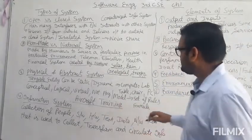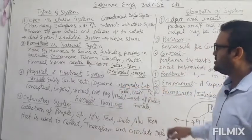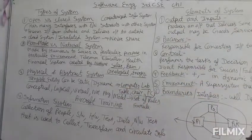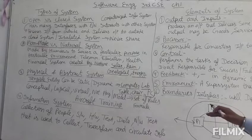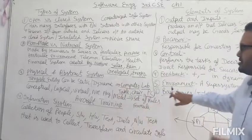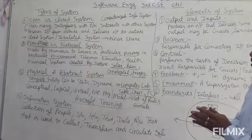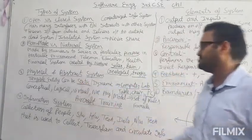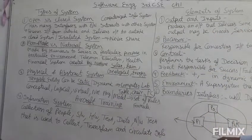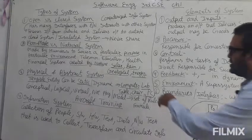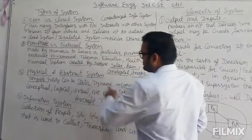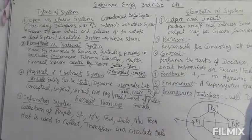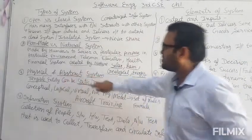For example, we have a computer lab. In this we have chairs, tables, and personal computers. We have physical components — all the hardware of a computer — and all the software are fixed with no change. This means this system is a static physical system. The audit may be changed, semester may be changed, or syllabus may be changed, but the lab itself is a static physical system.